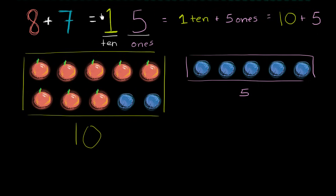So 8 plus 7 is 15. That was the whole point of this video. But we also want to think about what these numbers represent. 15 literally represents 1 ten plus 5 ones, or 10 plus 5.